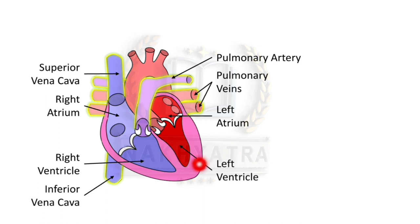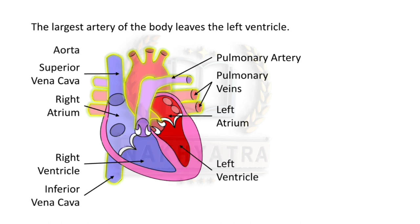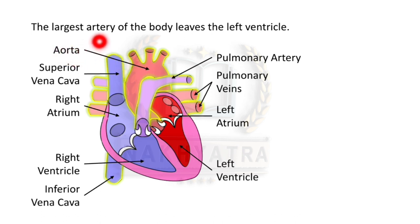The largest artery of the body leaves the left ventricle and this is called the aorta. The aorta is the largest artery of the body and it leaves the left ventricle. You might be asked: what is the largest artery of the body? The answer is the aorta.